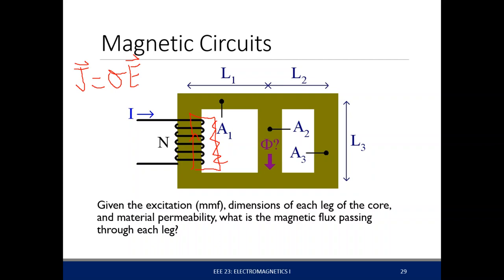Some magnetic field is generated here, and with that magnetic field we create magnetic flux. The relationship between the magnetic flux density and magnetic field intensity is B = μH. In our conducting materials, Ohm's law J = σE holds. The equivalent expression in a magnetic field is B = μH — this is the microscopic form of Ohm's law in our magnetic circuits.